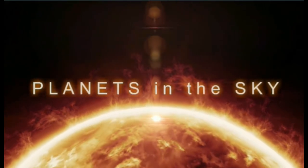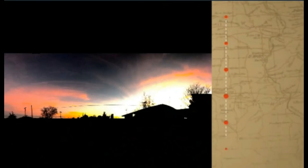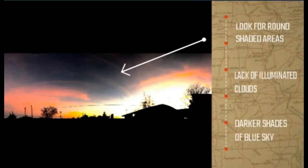Welcome back everybody. We're going to do a recap before we get this party started. First off, we're looking for round shaded areas in the sky. To find these round shaded areas, you just look for lack of illuminated clouds and darker shades of blue in the sky.